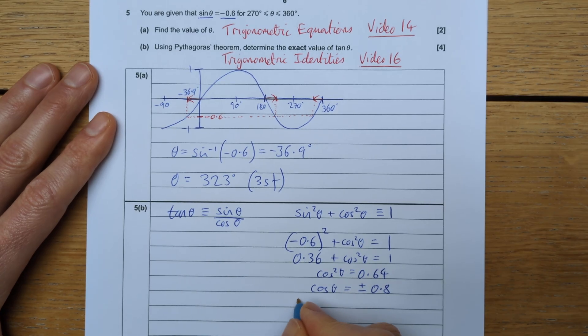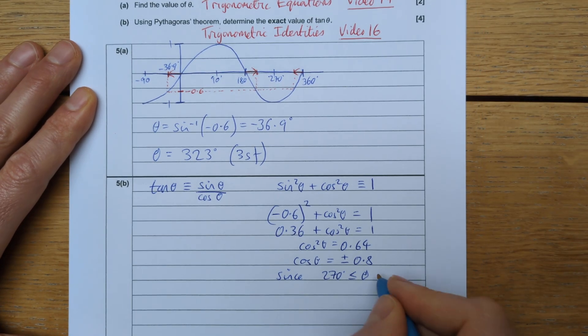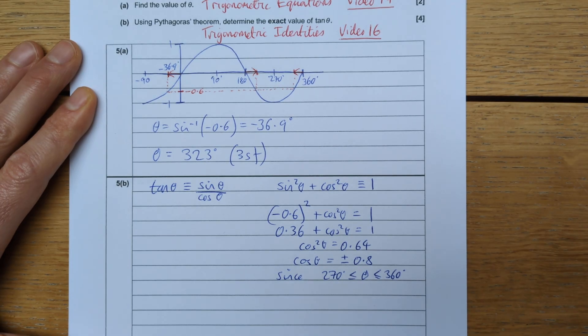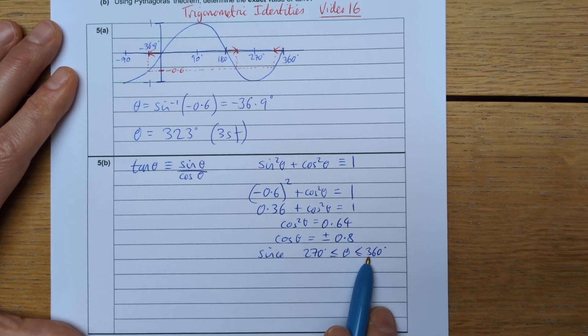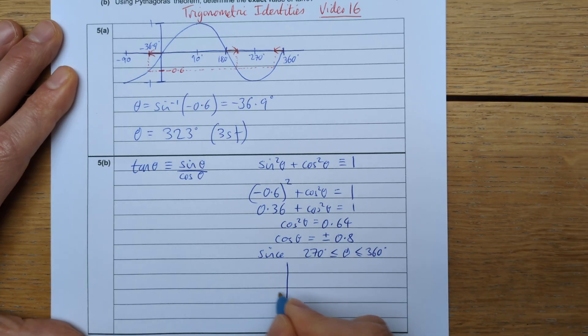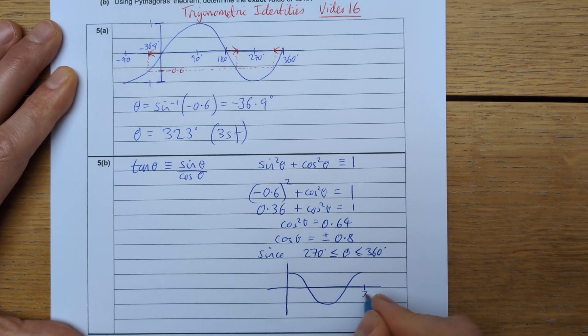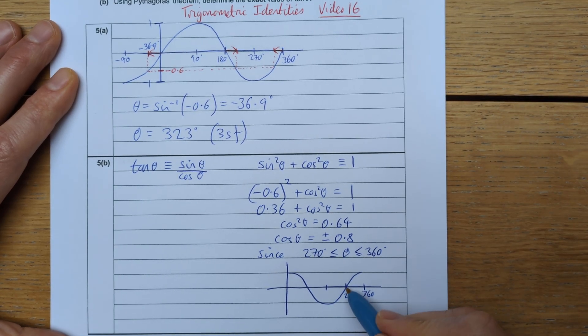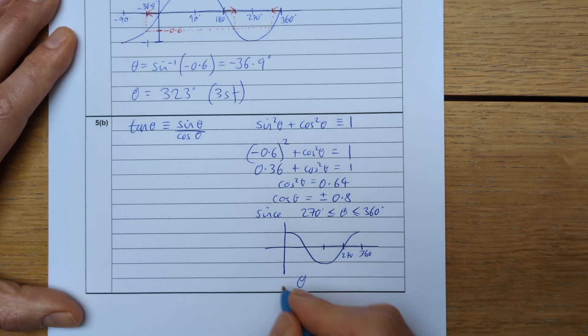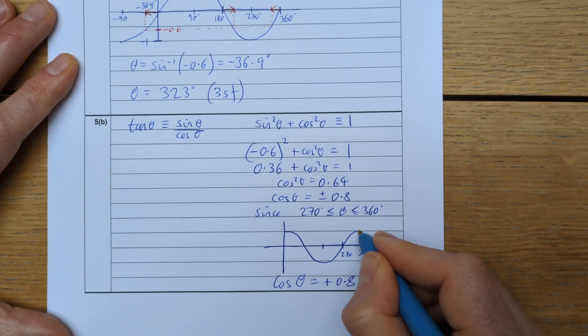But I also know that since theta is between 270 degrees and 360 degrees, which was one of the stipulations in the question, the cosine curve has a specific value in that region. If I sketch out the cosine curve, where that's 360, that's 180, that's 270, in the region 270 to 360 the cosine curve is positive. And hence, cosine theta has to be positive 0.8, since we are in this region here.